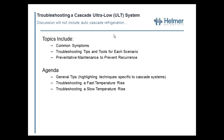Thank you, Ben. Welcome to the training class. We're going to start with talking about troubleshooting a Cascade Ultra Low System. This subject will not include any of the auto-cascade refrigeration systems, but just the more common Cascade ULTs. We're going to talk about common symptoms, troubleshooting tips, tools needed for each scenario, preventive maintenance, and how to prevent recurrence. The agenda covers general tips highlighting techniques specific to cascade systems, troubleshooting a fast temperature rise, and troubleshooting a slow temperature rise.